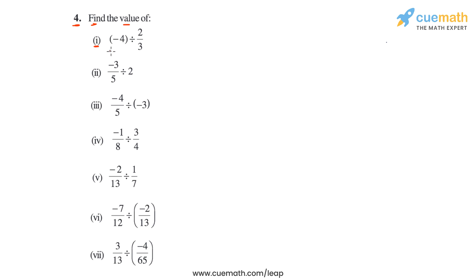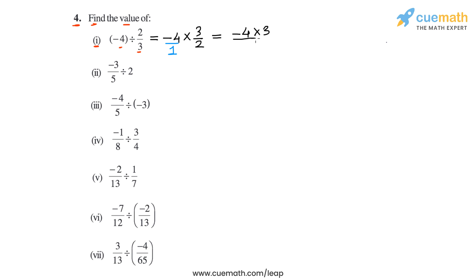Let's start with part 1, in which we have to calculate minus 4 divided by 2/3. We can write this as minus 4 multiplied by the reciprocal of 2/3, which is 3/2. So we have to multiply minus 4 and 3/2. Thinking of minus 4 as minus 4/1, we multiply the numerators: minus 4 into 3.